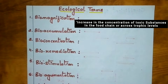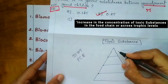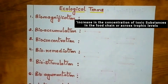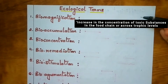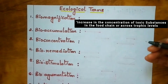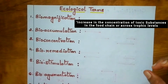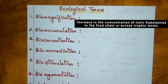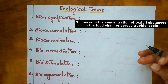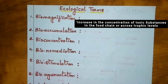How does biomagnification happen? When toxic chemicals like DDT or PCB remain in the environment and are consumed indirectly by organisms through food — when an organism in the higher food chain consumes lower organisms containing such chemicals, the chemicals get accumulated in the higher organisms. These toxic substances finally accumulate at the top consumers or tertiary consumers or carnivores. This is what is called biomagnification.